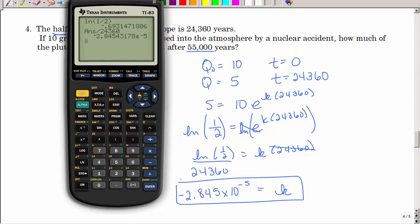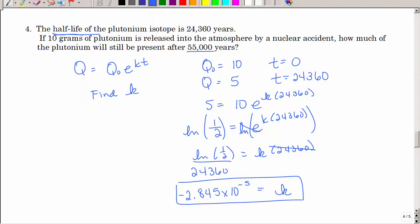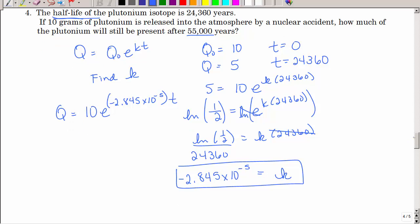It's small because it's not declining very rapidly. Now again, I would leave that in my calculator. So I have this model. And it says how much would be present after 55,000 years. So I'm going to let t be 55,000.